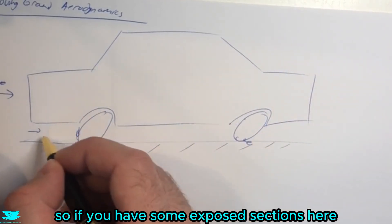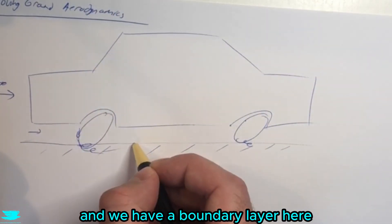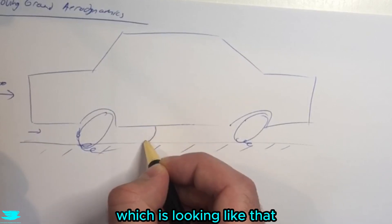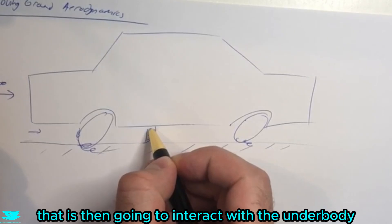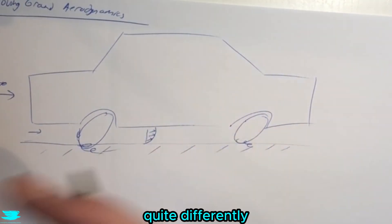If you have some exposed sections here and the flow is coming along, we have a boundary layer here with this profile. If you don't know what a boundary layer is, check out this video here. That is then going to interact with the underbody quite differently.